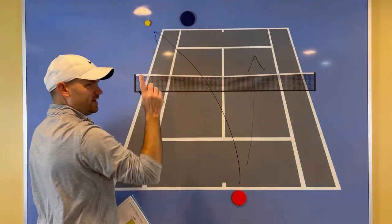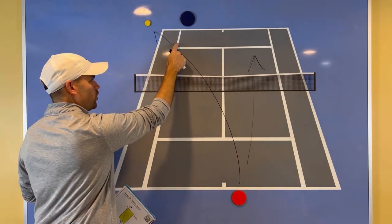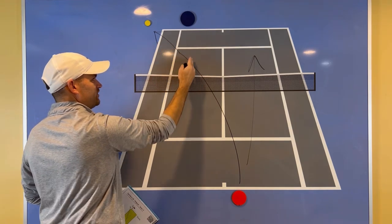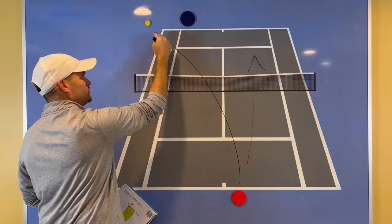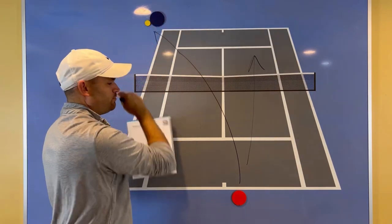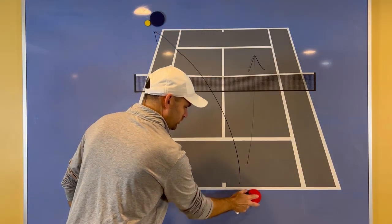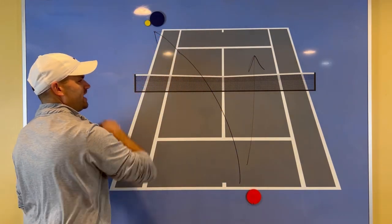You serve out wide if you can get the ball to cross the sideline, not the service line, but the sideline, the single sideline, that's really gonna pull the opponent off the court. And if you need help with that, you can always stand a little bit farther over to give you that angle.